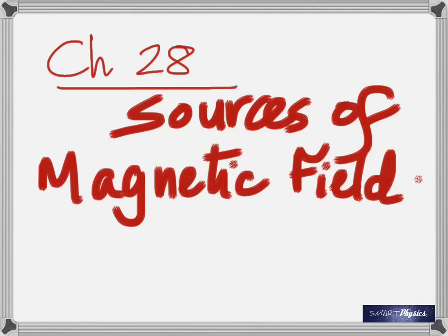We're going to look at different shapes of conductors. Number one, a straight conductor. Second, a circular loop. Third, a solenoid. Fourth, if time permits, a toroid. And then for the first time, we'll also define what an ampere is — we've not defined an ampere in the proper way. So that is what this story is about.